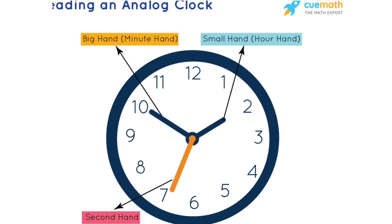Let's look at the first one — it's the small hand, also called the hour hand. 'Jarum pendek' — the shortest and smallest hand, also known as the hour hand. Then we have the big hand, or the minute hand — 'jarum yang besar dan juga panjang,' also known as the minute hand.